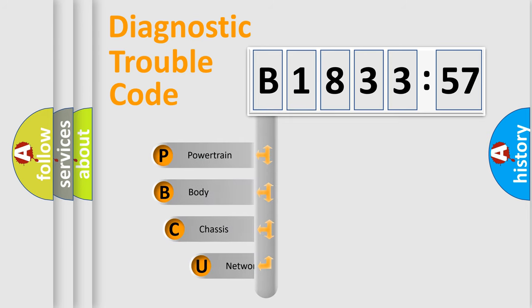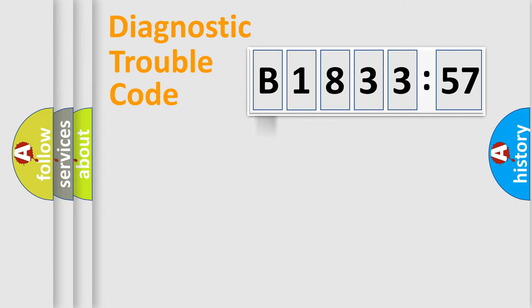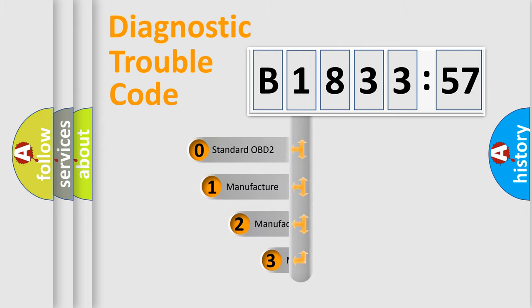First, let's look at the history of diagnostic fault code composition according to the OBD2 protocol, which is unified for all automakers since 2000. We divide the electric system of automobile into four basic units: Powertrain, Body, Chassis, and Network.